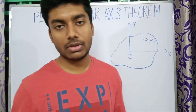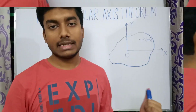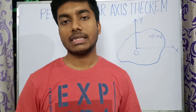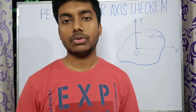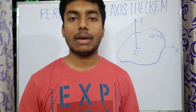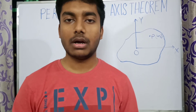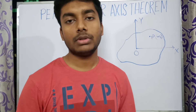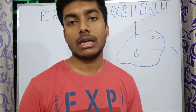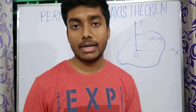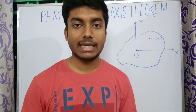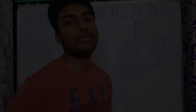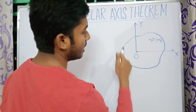This theorem states that the moment of inertia of a plane lamina about an axis perpendicular to it is equal to the sum of all moments of inertia of the plane lamina about two perpendicular axes, the intersecting point of which is the same as the perpendicular axis.